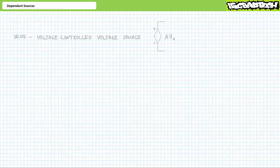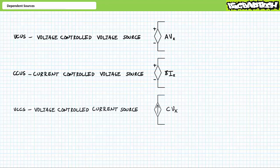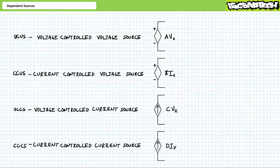Let's take a look at dependent DC sources, of which there are four types: voltage-controlled voltage sources, current-controlled voltage sources, voltage-controlled current sources, and current-controlled current sources. Up until this point, we've dealt with sources of fixed magnitude — a 12-volt source is 12 volts today, tomorrow, and yesterday. These fixed-magnitude sources are considered independent sources, whose output is independent of any other electrical property. There can and do exist sources with variable outputs proportional to some other electrical property, called dependent sources.